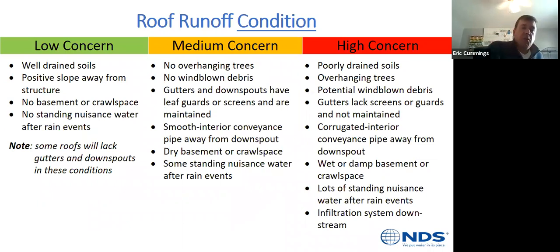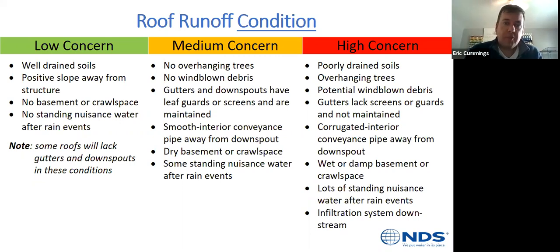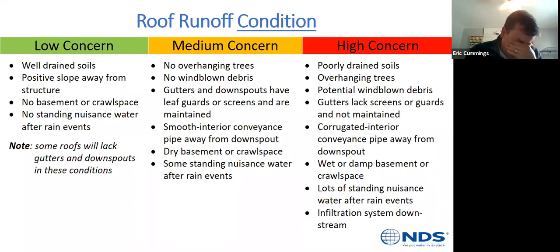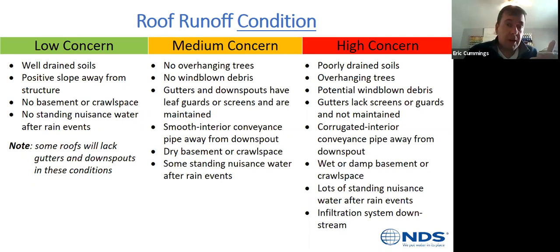When figuring out what to use under a downspout, consider the concern level. Low concern: well-drained soils, positive slope, house at top of a hill, no basement. Medium concern: no overhanging trees but some small standing nuisance rainwater after a rain event. High concern: a roof in bad shape, lots of mature trees hanging over the gutters potentially clogging things, poor clay soils holding and saturating a lot of water — these are scenarios where you really want a catch basin with a filter.